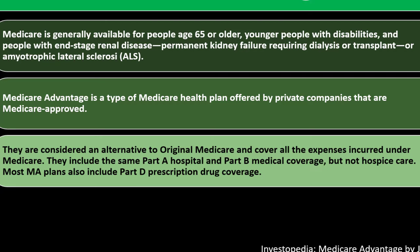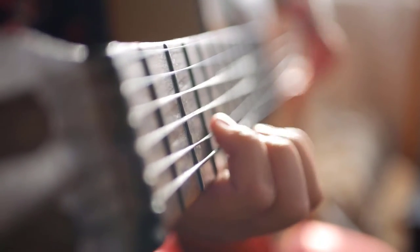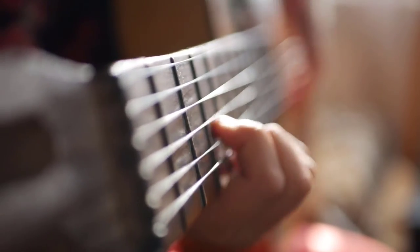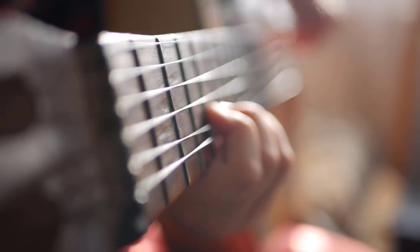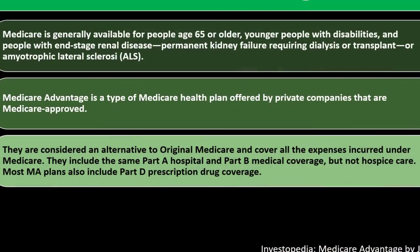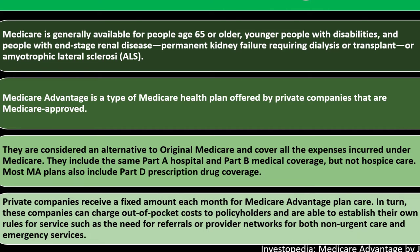Medicare Advantage plans include the same Part A hospital and Part B medical coverage as original Medicare, but not hospice care. Most Medicare Advantage plans also include Part D prescription drug coverage, adding some additional complexity. Private companies receive a fixed amount each month for Medicare Advantage plan care.